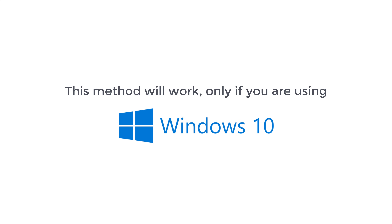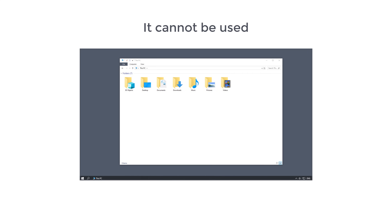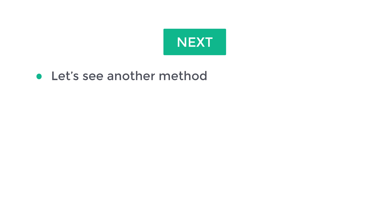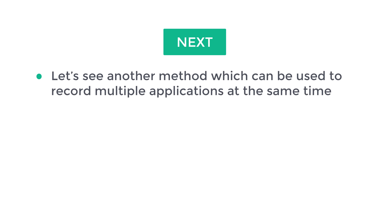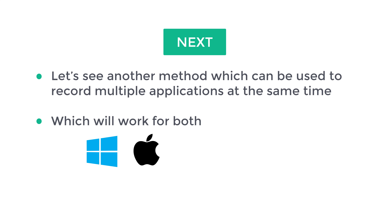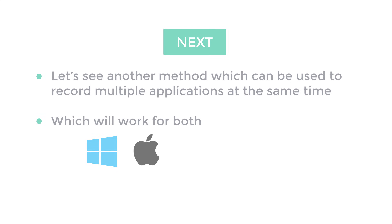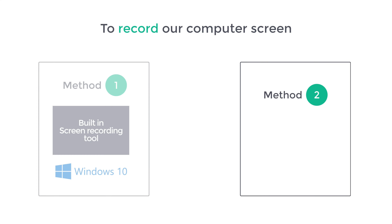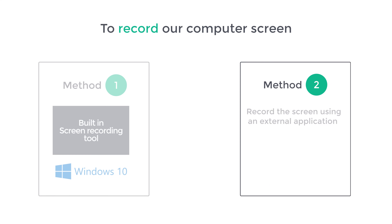Now this method will work only if you are using Windows 10, and it cannot be used for recording the File Explorer screen. So next, let's see another method which can be used to record multiple applications at the same time, and which will work for both Windows and Mac. So let's go to the second method, which is to record the screen using an external application.